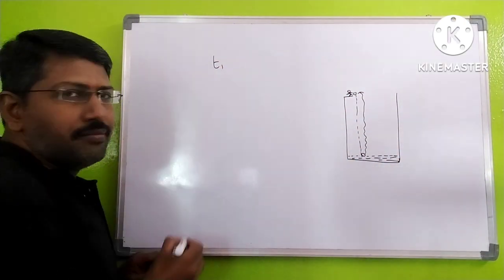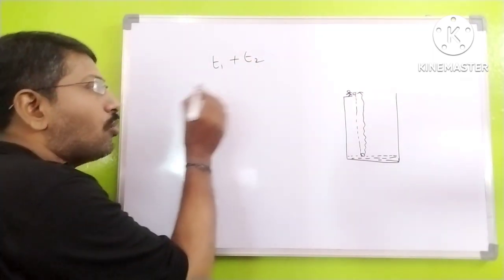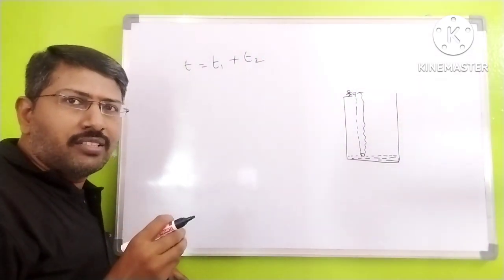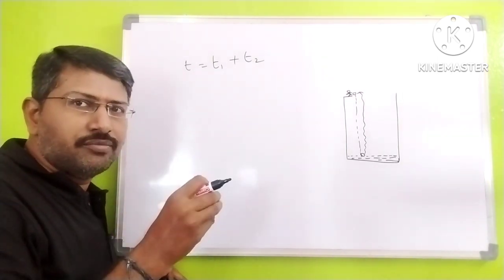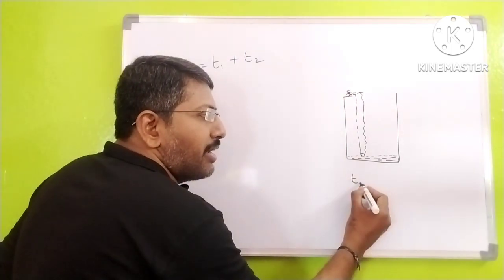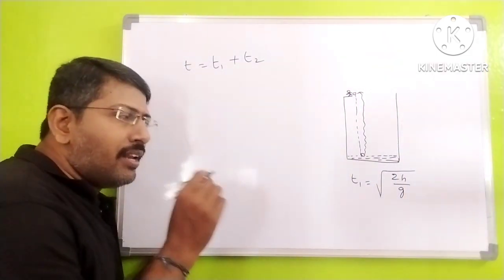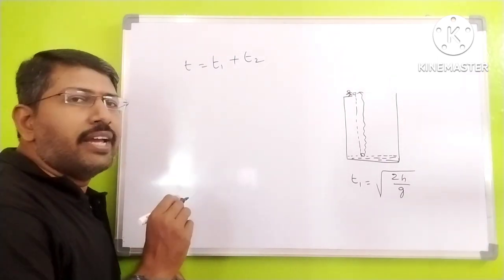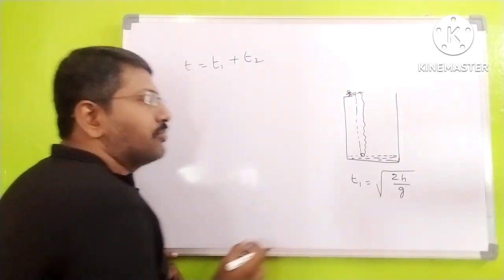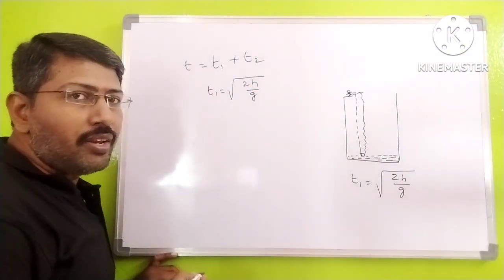When the stone reaches the water I take time t1. When sound reaches the observer from the water I take time t2. Total time is T. A stone is dropped from height h — after what time does it reach the ground? That means t1 is equal to the square root of 2h by g. This is the formula for t1.